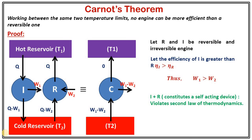This combined engine C is clearly violating the Clausius statement, which means it is violating the second law of thermodynamics. Therefore, whatever we assumed is wrong. Thus, we can say the efficiency of the irreversible engine should not be greater than that of the reversible engine — hence the efficiency of the reversible one is more.